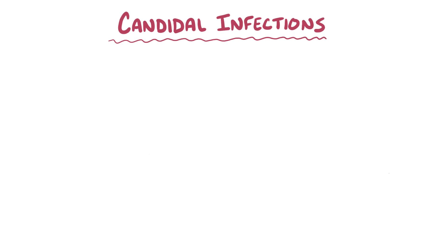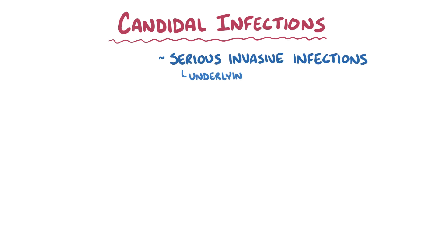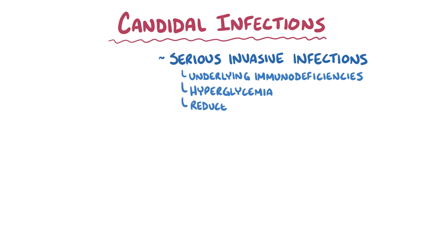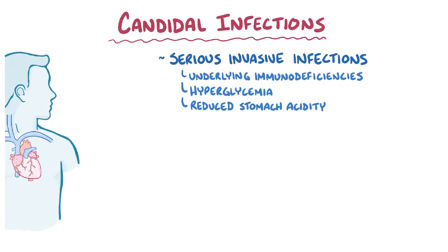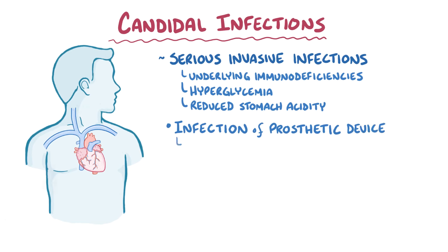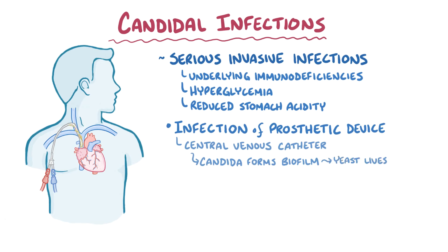In addition to local infections, Candida can cause more serious invasive infections, and these often develop in individuals that have underlying immunodeficiencies. Other risk factors for serious Candida infections include hyperglycemia and reduced stomach acidity. The most common situation is an infection of a prosthetic device like a central venous catheter. In these settings, Candida forms a biofilm, which is where the yeast lives inside a jelly-like matrix of proteins and behaves more like a large colony than a collection of individual cells. Candida is able to infect devices, and if the infection isn't treated, then over time small clumps of yeast-laden biofilm can break away, at which point they can get into the blood and cause infections in other locations, like on the heart valves.